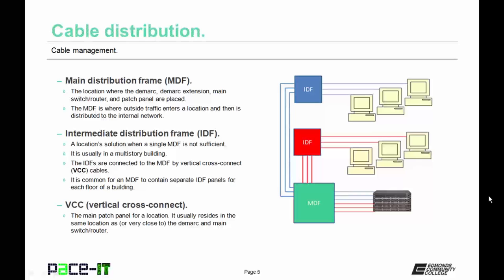It is also possible to have an intermediate distribution frame, or IDF. It's a location's solution for when a single MDF is not sufficient, and they usually occur in multi-story buildings. The IDFs are connected to the MDF by vertical cross connect cables, or VCC cables. It is common for an MDF to contain separate IDF panels for each floor of a building.